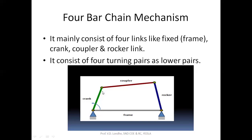The rotary motion of the crank will be turned into oscillating motion of the rocker. It will have 4 turning pairs — 1, 2, 3, and 4 — and they have surface or area contact. So they come under the category of lower pairs.